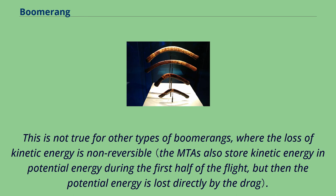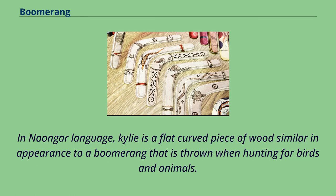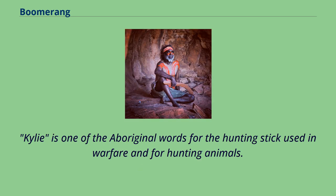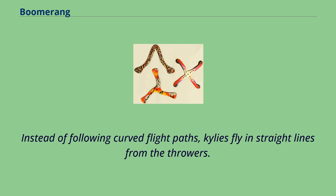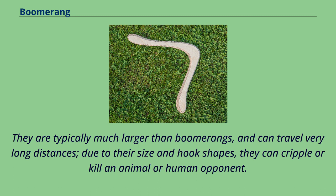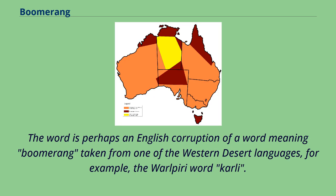In Noongar language, a kylie is a flat curved piece of wood similar in appearance to a boomerang, thrown when hunting birds and animals. Kylies are one of the Aboriginal words for hunting sticks used in warfare and hunting. Instead of following curved flight paths, kylies fly in straight lines from the thrower. They are typically much larger than boomerangs and can travel very long distances. Due to their size and hook shape, they can cripple or kill an animal or human opponent. The word is perhaps an English corruption of a word meaning boomerang from western desert languages, for example the Warlpiri word 'Carly.'